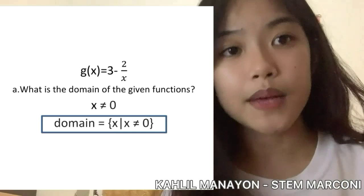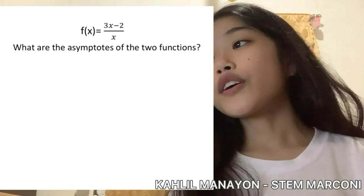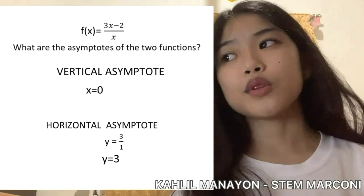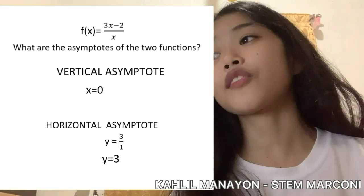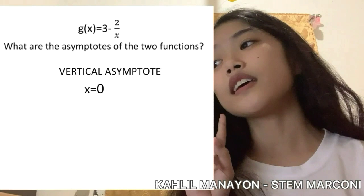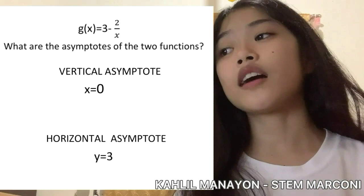For the second question: what are the asymptotes of the two functions? We have vertical and horizontal asymptotes. For the first function, the vertical asymptote is x equals zero. For the horizontal asymptote, since n equals m, we find the ratio of the leading coefficients of the two highest exponents, which is 3 over 1, so the horizontal asymptote is y equals 3. For the second function, the vertical asymptote is x equals zero and the horizontal asymptote is y equals 3.